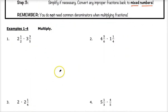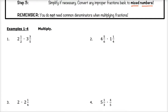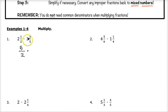In number one we have two and one half times three and three fifths. I'm going to first convert each of these mixed numbers to improper fractions. Two and one half is two times two plus one, which is five halves. Three and three fifths: five times three is fifteen, plus three is eighteen, so this is eighteen fifths.